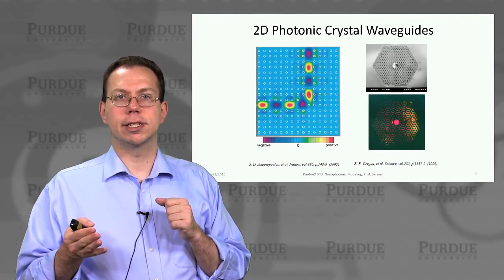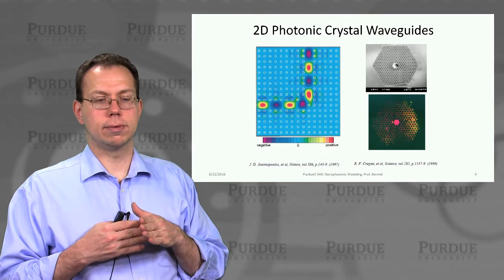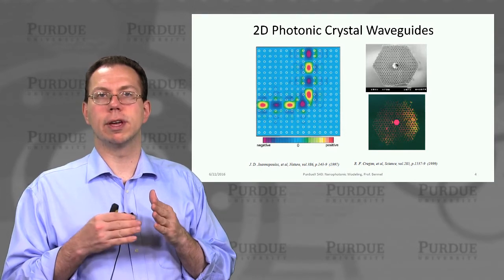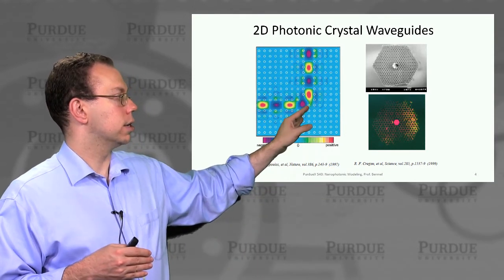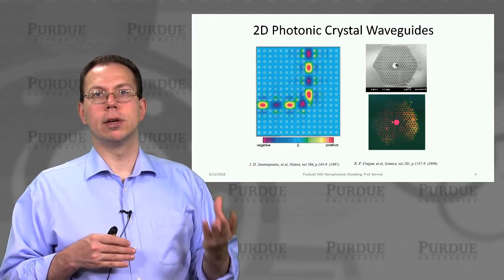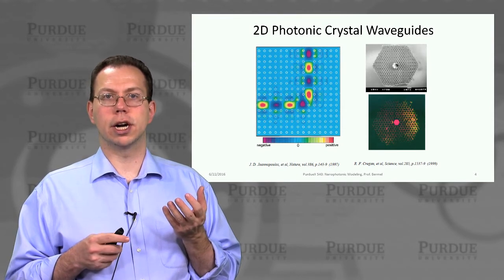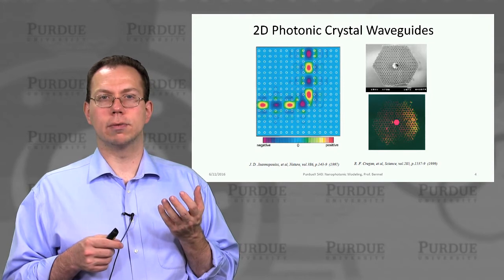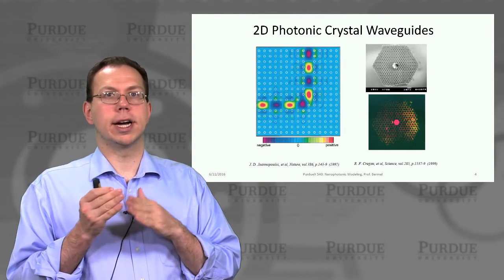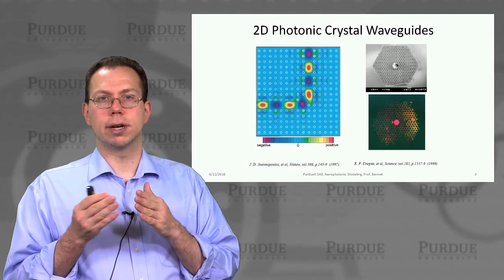Line defects don't necessarily have to go in a straight line forever — they can also bend. What's really interesting about the bent waveguide is that because it can't leak into arbitrary regions, if you design it just right, you can actually get it to bend around a curve with very little loss. This is not something that works well for an index-guided waveguide that's highly bent, mainly because you break the index guiding condition. This gives rise to the possibility of having tighter interconnects for on-chip communication.